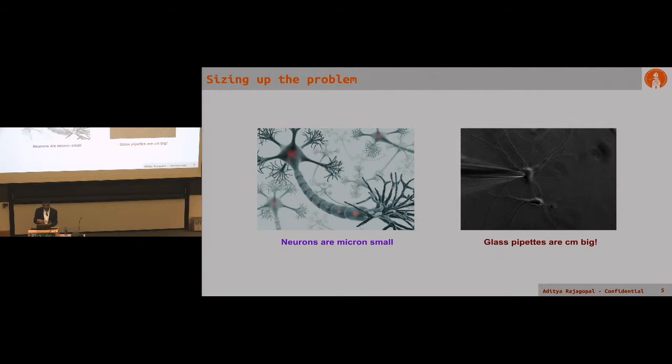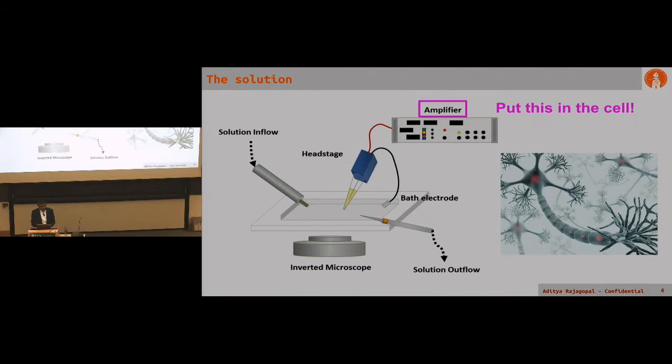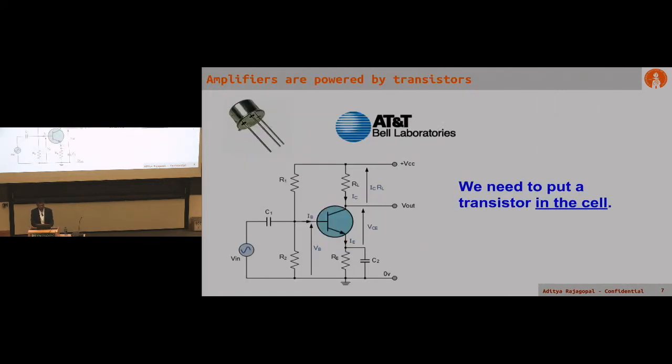Really, the problem was that we had a size problem. Neurons are microns small and glass pipettes are centimeters big. So we thought, maybe there's a way to shrink the patch pipette. We figured, let's put that entire amplifier in the cell itself. It might be the most convenient way to do it.